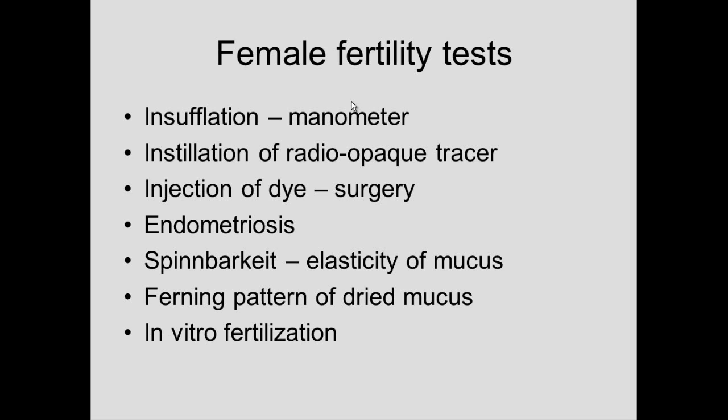Installation of a radioactive tracer is another way to check if there's a patent oviduct. You can also inject dye and look for it at the end with surgery — that's a more invasive way. These are ways to look at problems associated with whether the fallopian tube is actually open and patent.